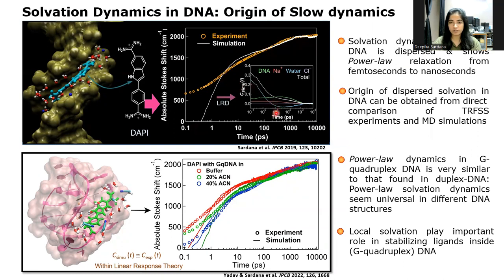Such dispersed solvation dynamics seems to be universal, where we also observe such power law type relaxation even in the case of non-canonical DNA structure like G-quadruplex DNA.